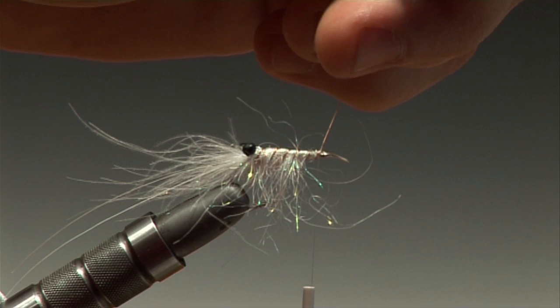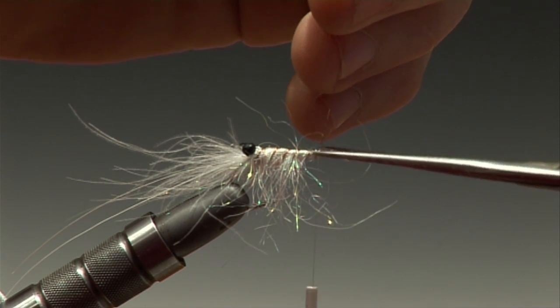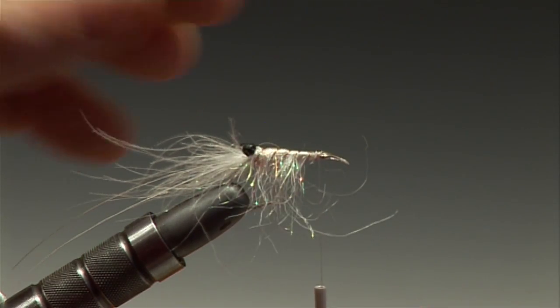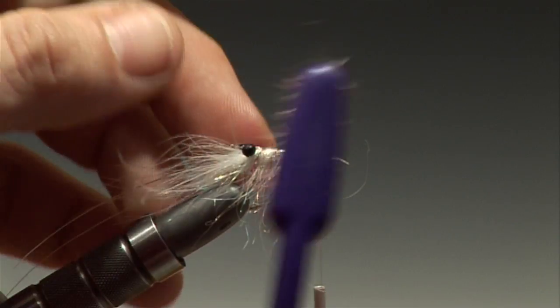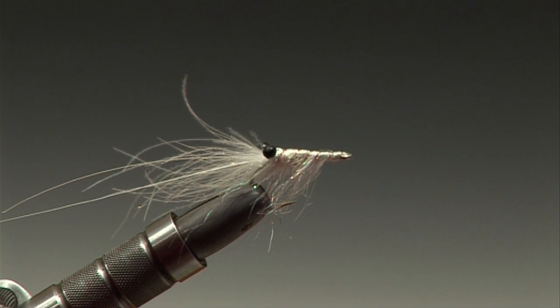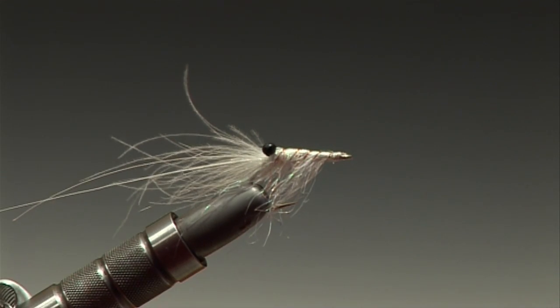Remove the excess by just trimming it off as close to the hook eye as possible. Now just get your fibers brushed the correct way and you can trim off the excess shellback. You can whip finish and remove the tying thread.